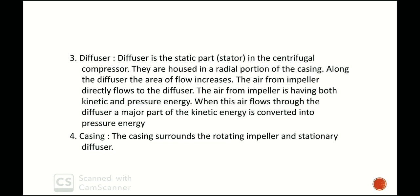Along the diffuser, the area of flow increases. As the area increases, velocity decreases as per the continuity equation, and pressure automatically increases. The air from the impeller flows directly to the diffuser, carrying both kinetic energy and pressure energy. As it flows through the diffuser, most of the kinetic energy is converted into pressure energy.